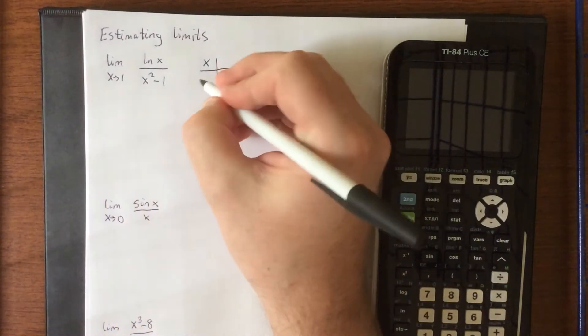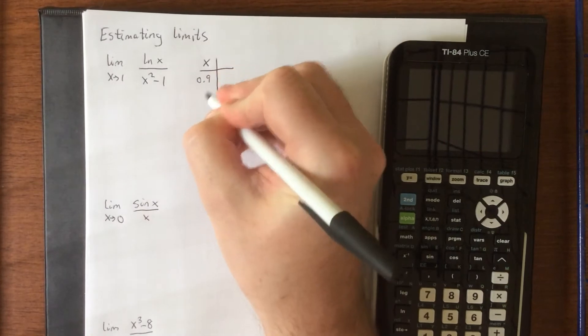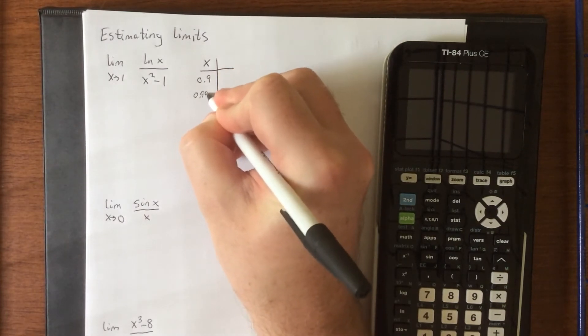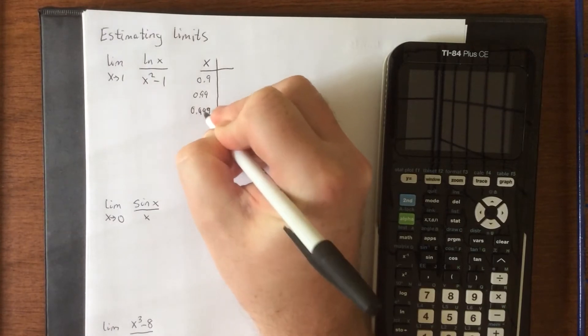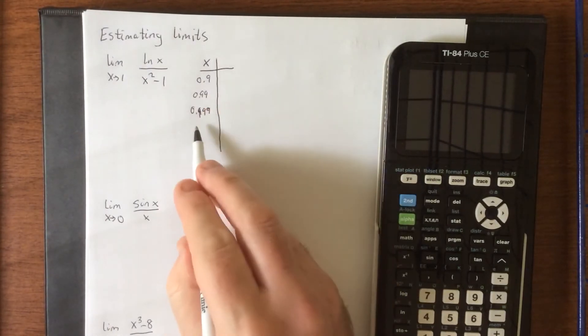That is to say, go with numbers like 0.9, 0.99, and 0.999, all values that are less than 1 but getting closer to it.